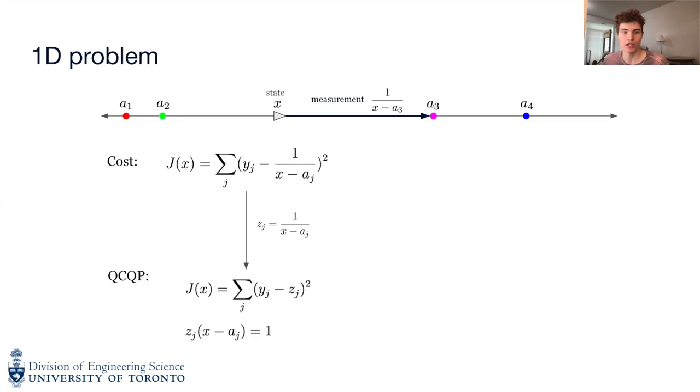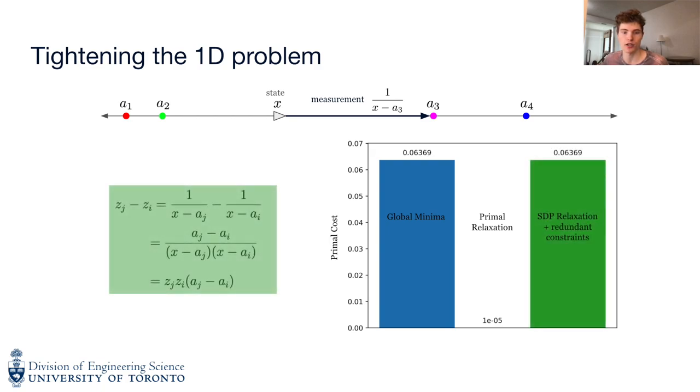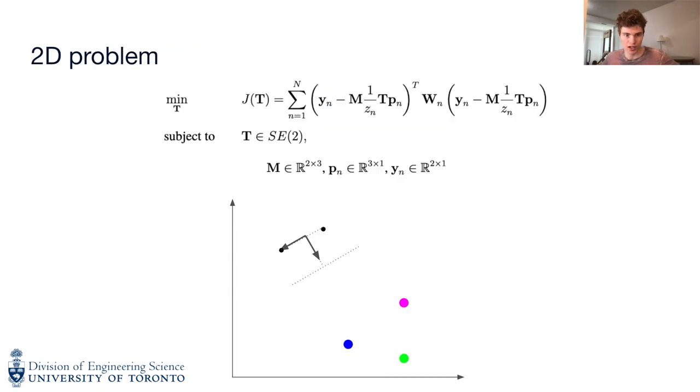To investigate tightening, we explored reduced dimension problems. We attempted a 1D version, localizing the camera on the number line. The measurement model is rational, resulting in a non-polynomial cost function. We found that the primal relaxation of this 1D problem was not tight, as indicated by the duality gap shown in this plot. However, we could find a redundant constraint that tightened the problem.